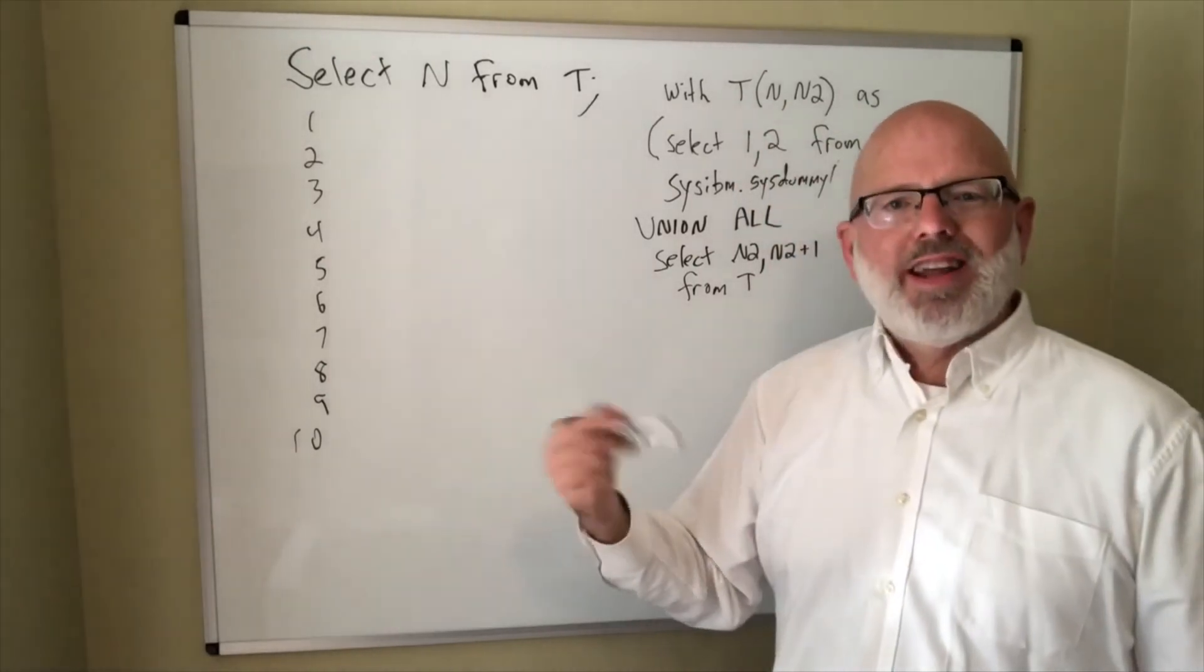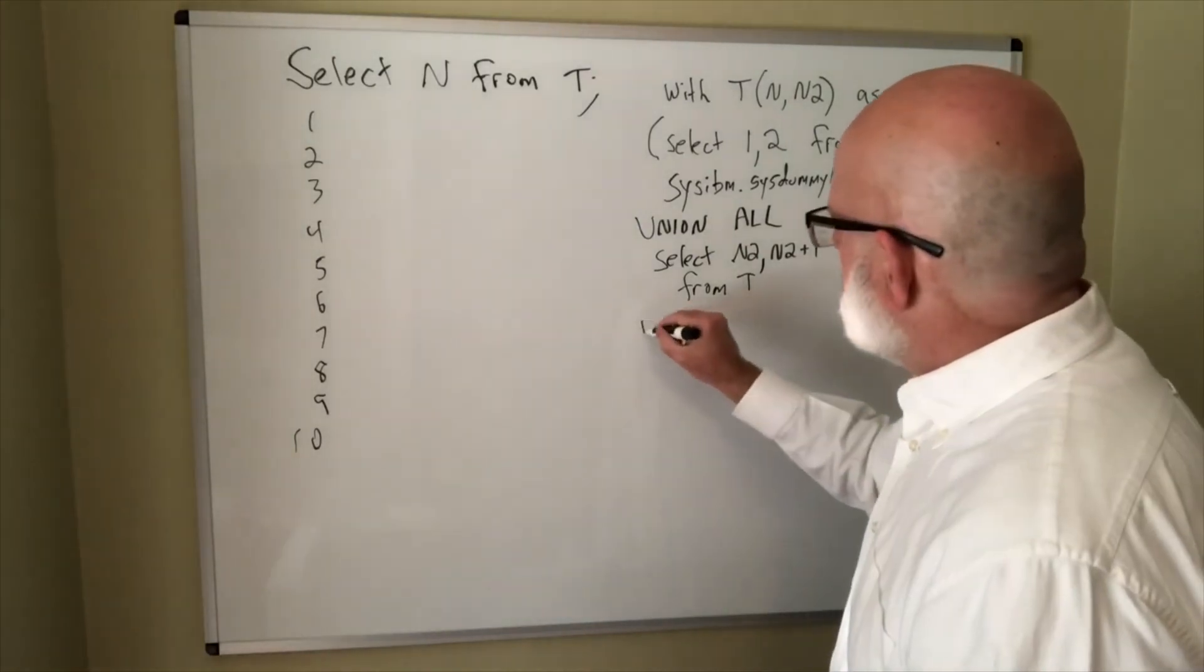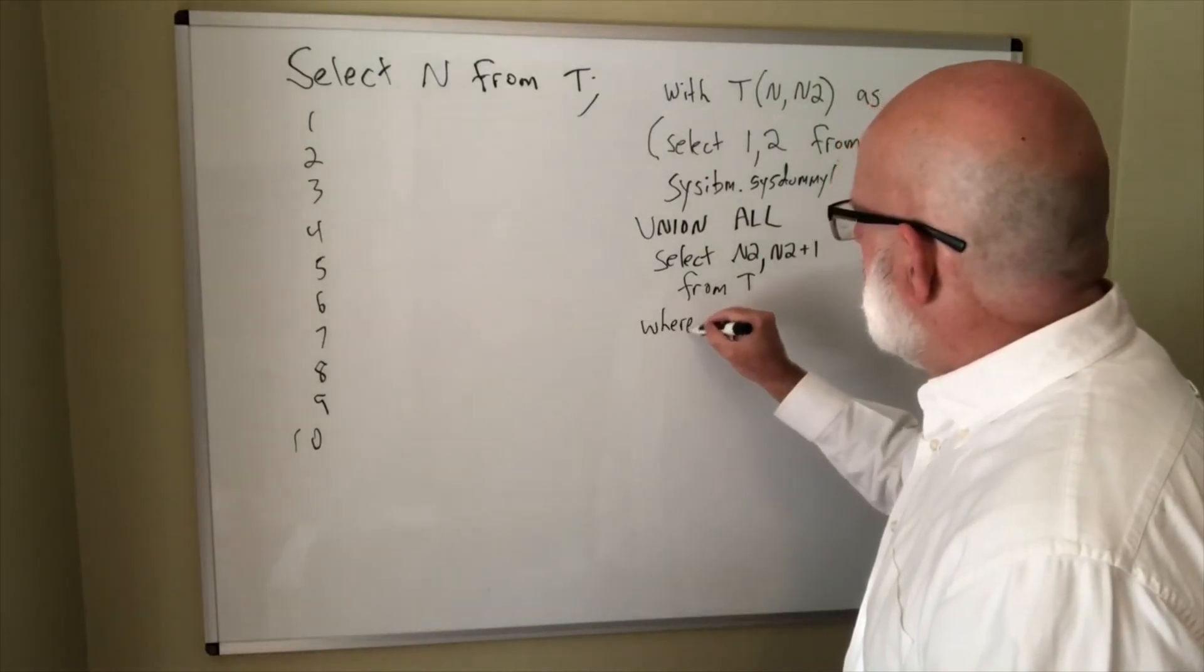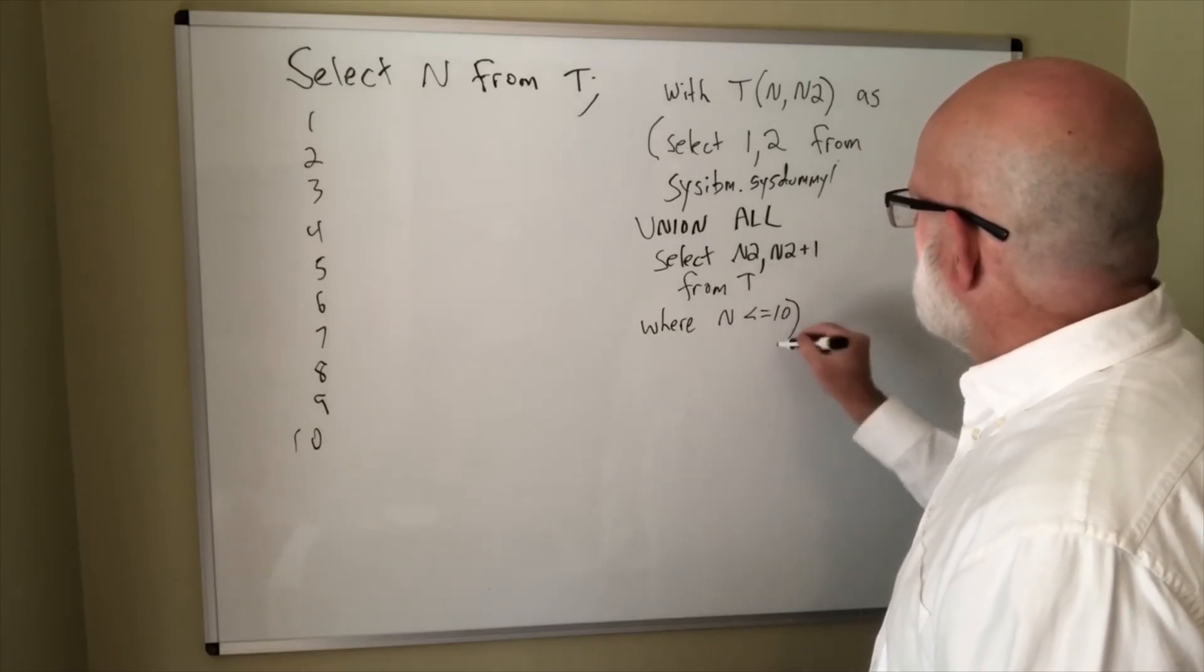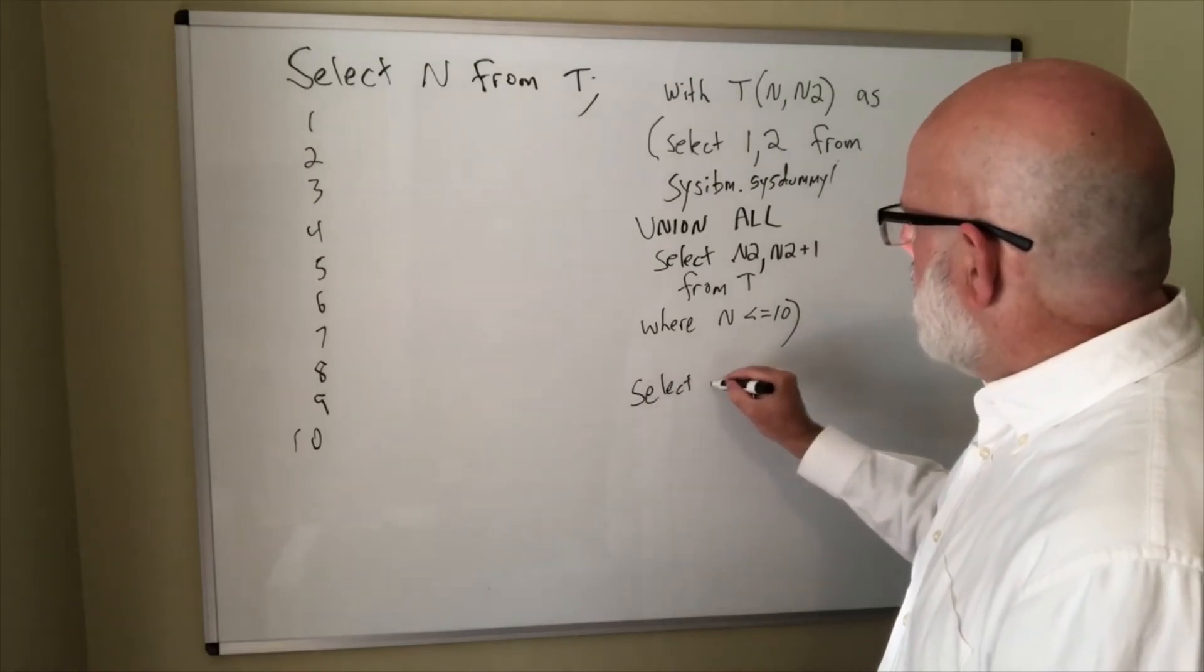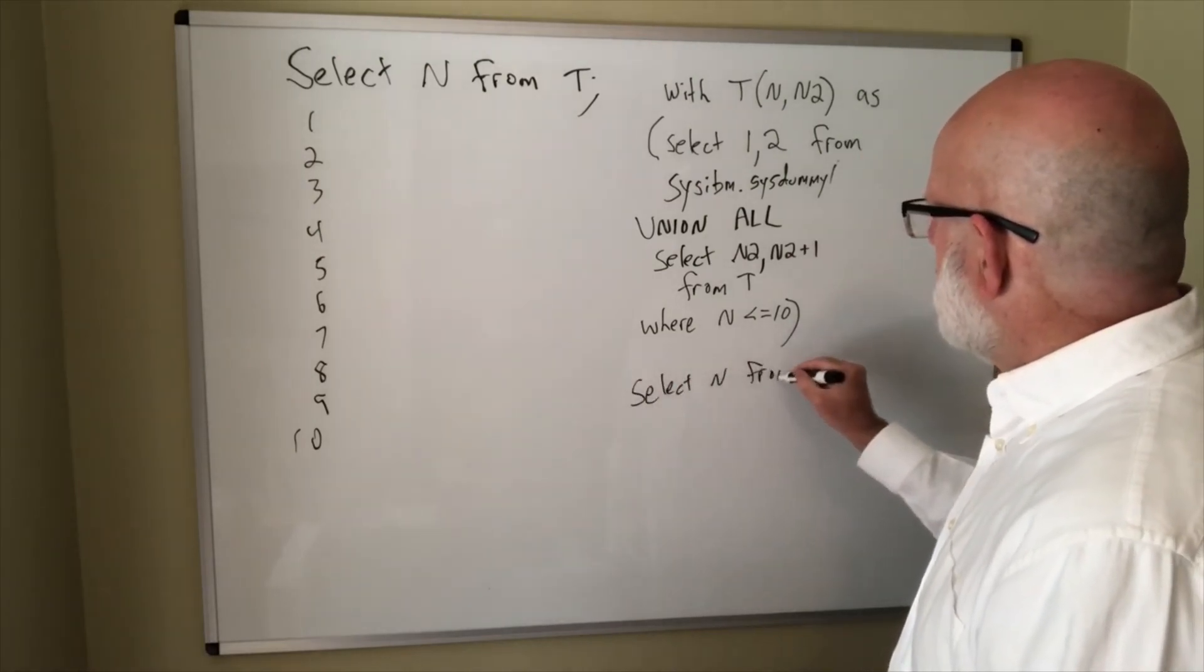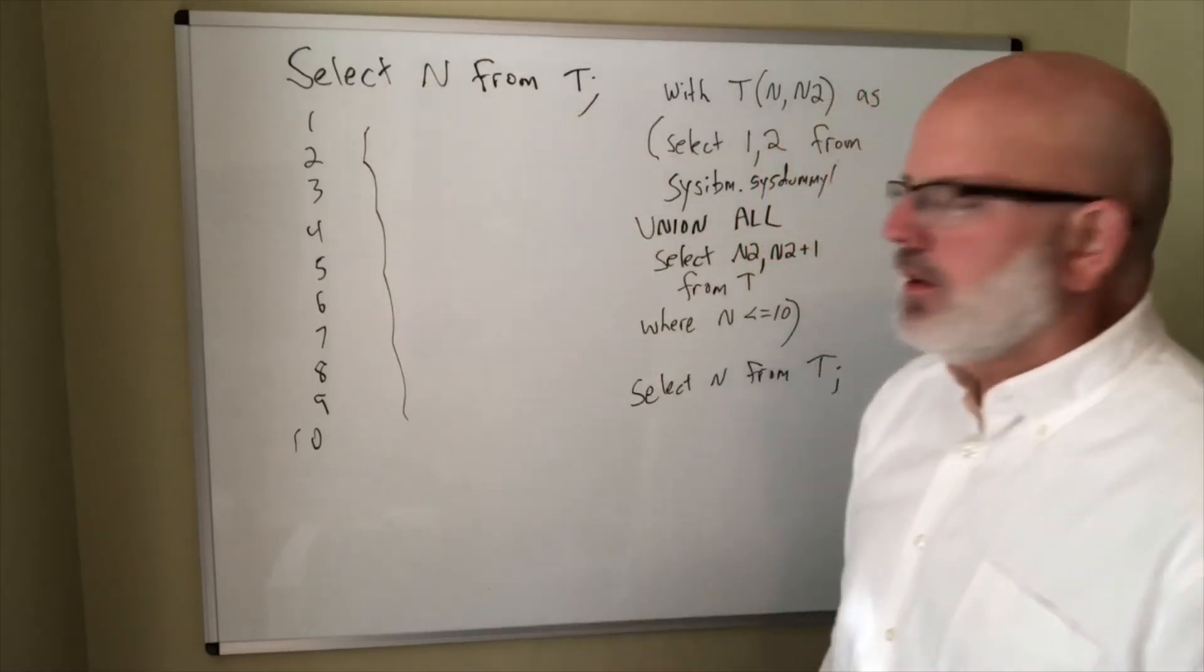Now you always have to put in a catcher to make sure that it won't just run forever. So we're going to say where n is less than or equal to 10. And now when I say select n from t, I will get my list of numbers, 1 to 10.